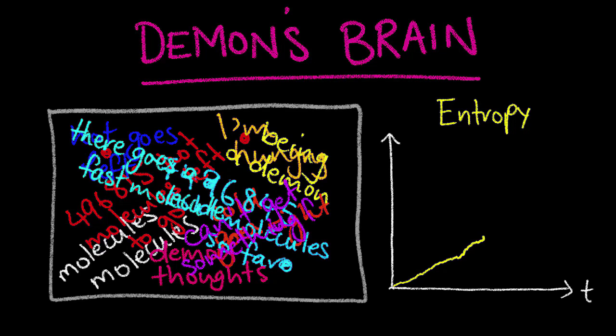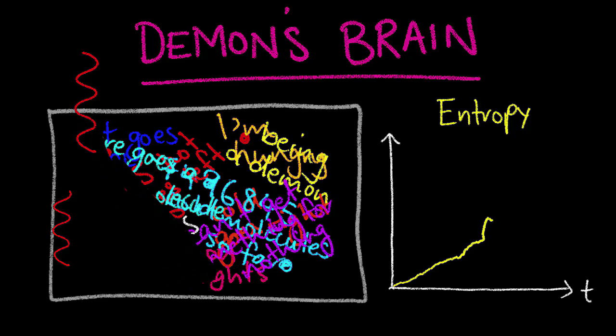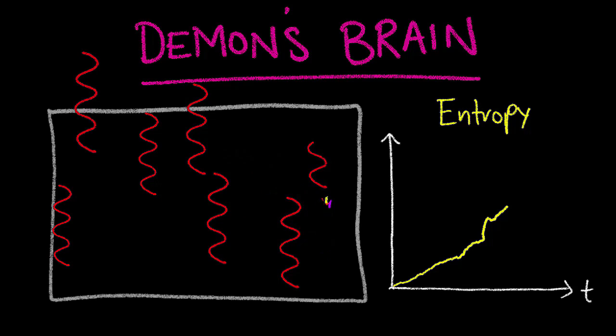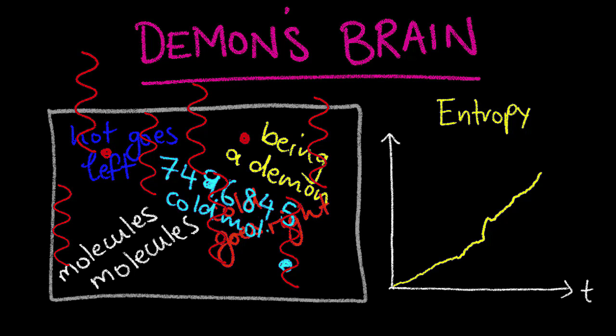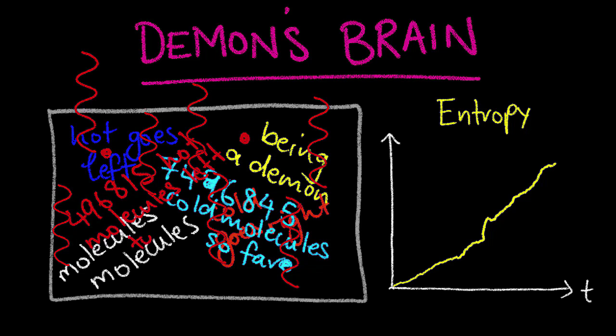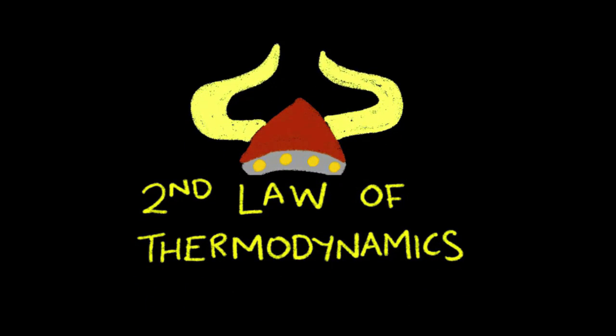The demon's brain is also a finite size, so when it gets full, he needs to delete some information to make room for more. This erasing of information also costs energy. Heat is created in the process, entropy of the system increases, and the second law of thermodynamics prevails.